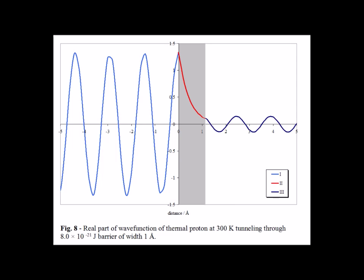In figure 8, the proton is tunneling through a barrier of 1 angstrom through a potential of 8 times 10 to the minus 21 joules. We notice the small amplitude in region 3, which tells us that the likelihood of the particle tunneling through under these conditions is relatively small.